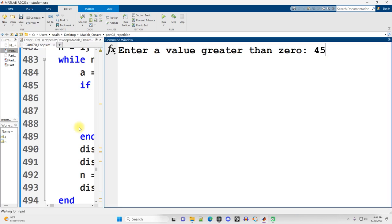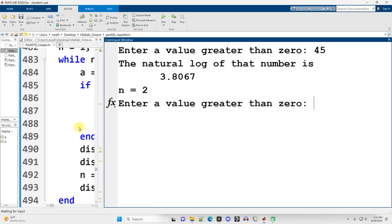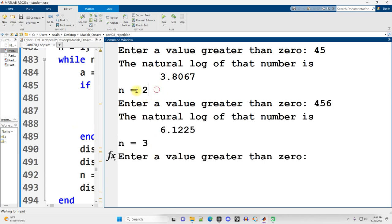So enter a value greater than zero. Sure, there you go. And then do it again, because the loop is repeating. Okay, great. And we see n counting up this time. I'm not sure I printed that out before, but I could have. And now I get stubborn.